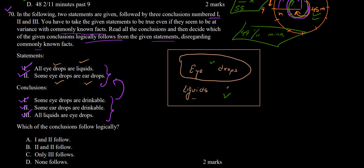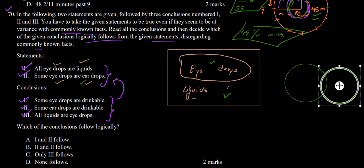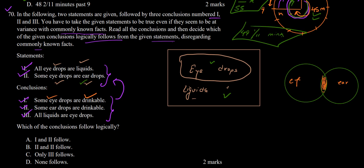Conclusion 1 says: some eye drops are drinkable. However, neither statement mentions anything about drinkability — whether eye drops, liquids, or ear drops are drinkable is not stated. So conclusion 1 is wrong. Conclusion 2 says: some ear drops are drinkable. Again, there is nothing in the statements about drinkability of ear drops, so conclusion 2 is also not valid.